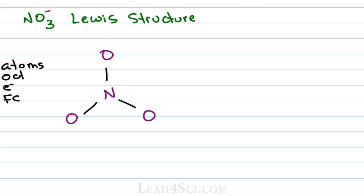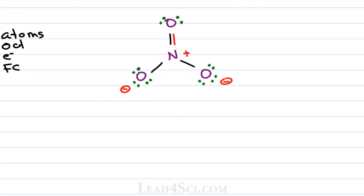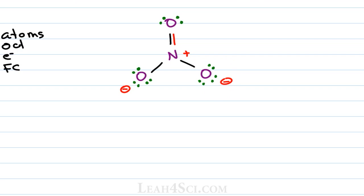What this comes to is a nitrogen double bound to one oxygen and single bound to the two other oxygens. Nitrogen has a formal charge of plus one, the two single bound oxygens each have a negative formal charge and that gives us a net of NO3 minus one. But what if I chose to put the pi bond on the lower right oxygen or the pi bond on the lower left oxygen?